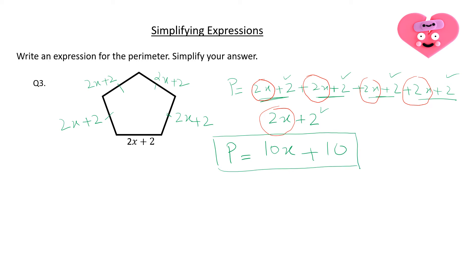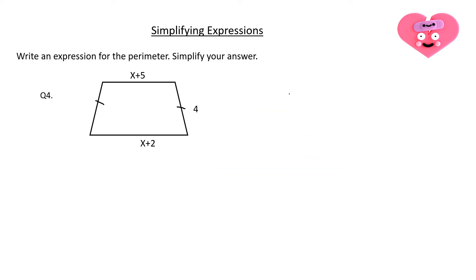Next we have a trapezium. The side lengths of the trapezium are x plus 5, 4, x plus 2 — and the missing side is also 4 because these two lines indicate that the lengths are the same. In order to write the expression for the perimeter I will add all the side lengths: x plus 5 plus 4 plus x plus 2 plus 4.